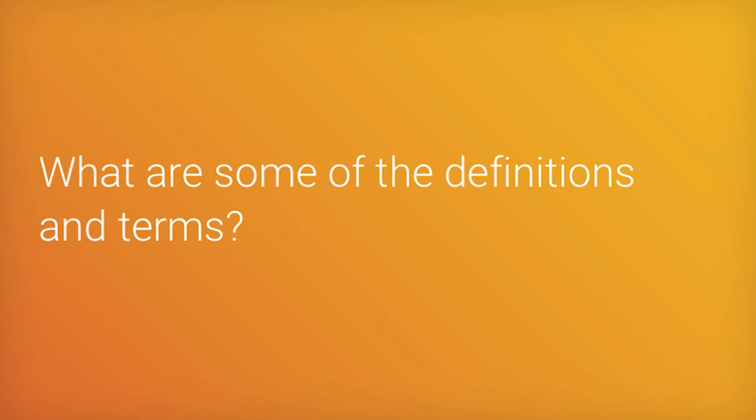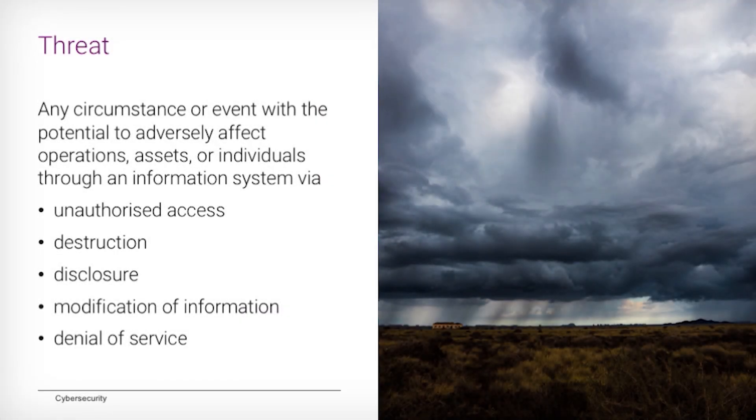Let's dig into some of the definitions and terms. The first one is a threat. What exactly is a threat? A threat is any circumstance or event that could cause something bad to ultimately happen — it could be unauthorized access, some type of destruction, or disclosure of data. It's basically a bad thing that could happen against a system.